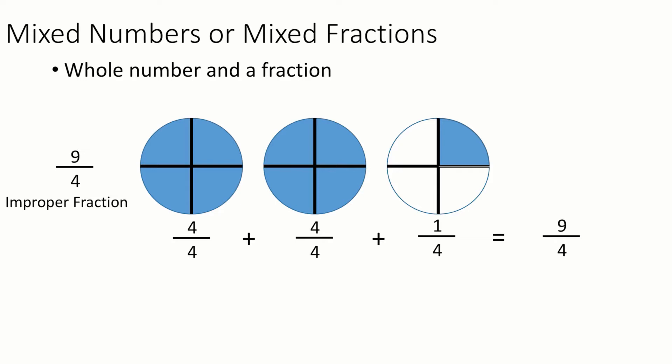However, if we're using mixed numbers, we can then take the 4 over 4s and make them just solid 1s because they're a whole. So then you can have 1 plus 1 plus 1 over 4, and that gives you 2 wholes and 1 over 4.